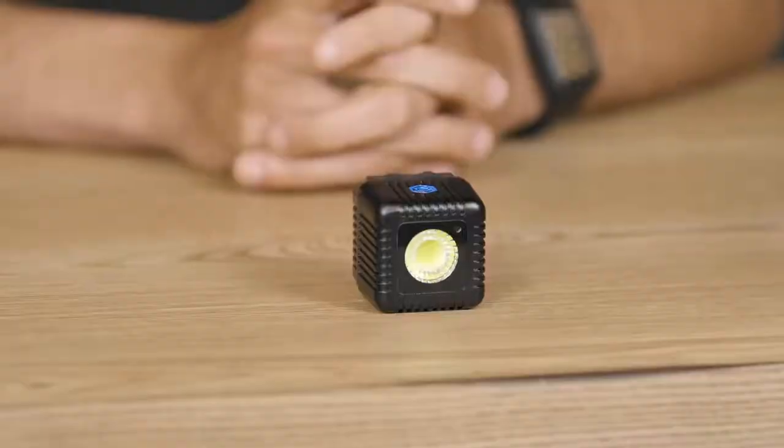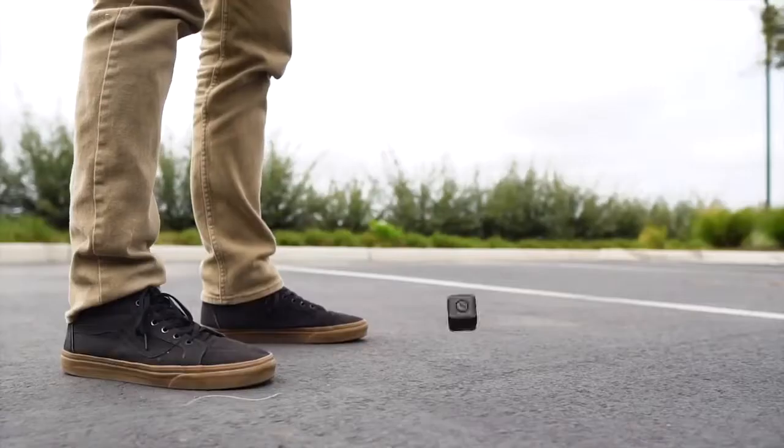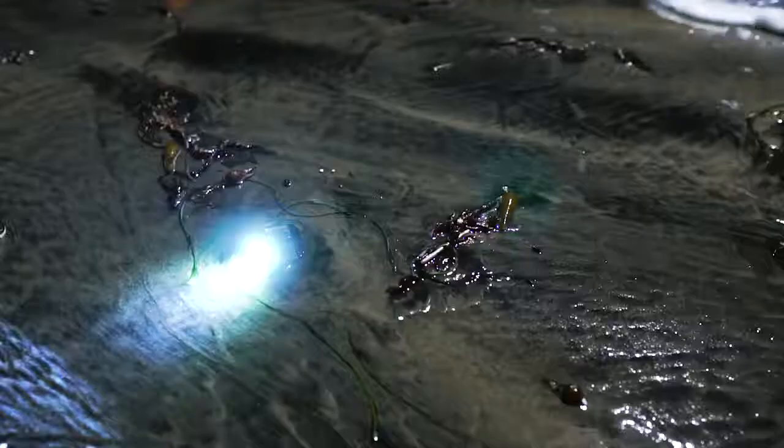Riley here from Lume Cube and I'm here to tell you all about the world's most versatile light. At one and a half inches cube, the Lume Cube comes in a durable aluminum housing that's waterproof to 100 feet and can withstand just about every element that you can put it through.